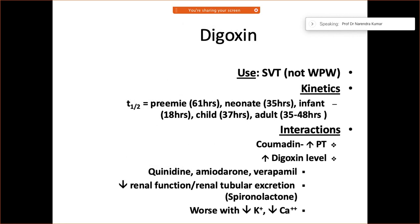Digoxin is used for SVTs but not for accessory pathway-mediated arrhythmias. Its half-life is approximately 36 to 48 hours.